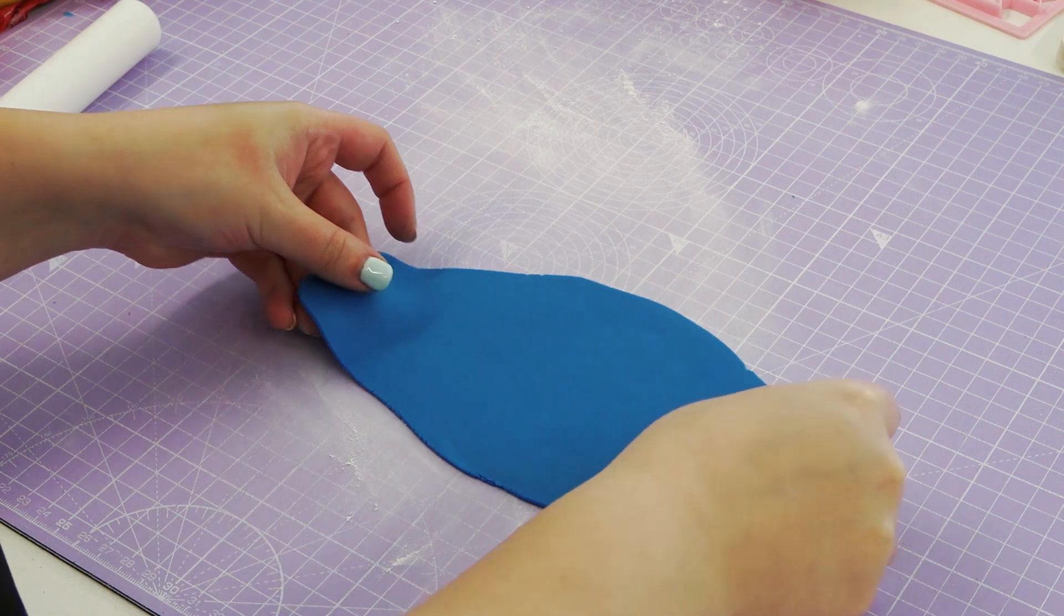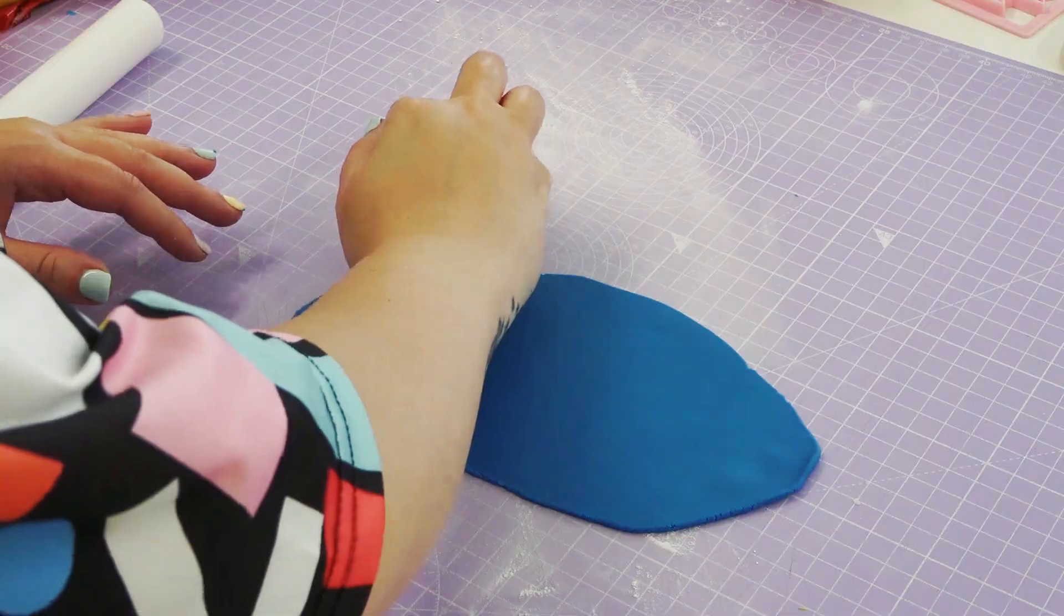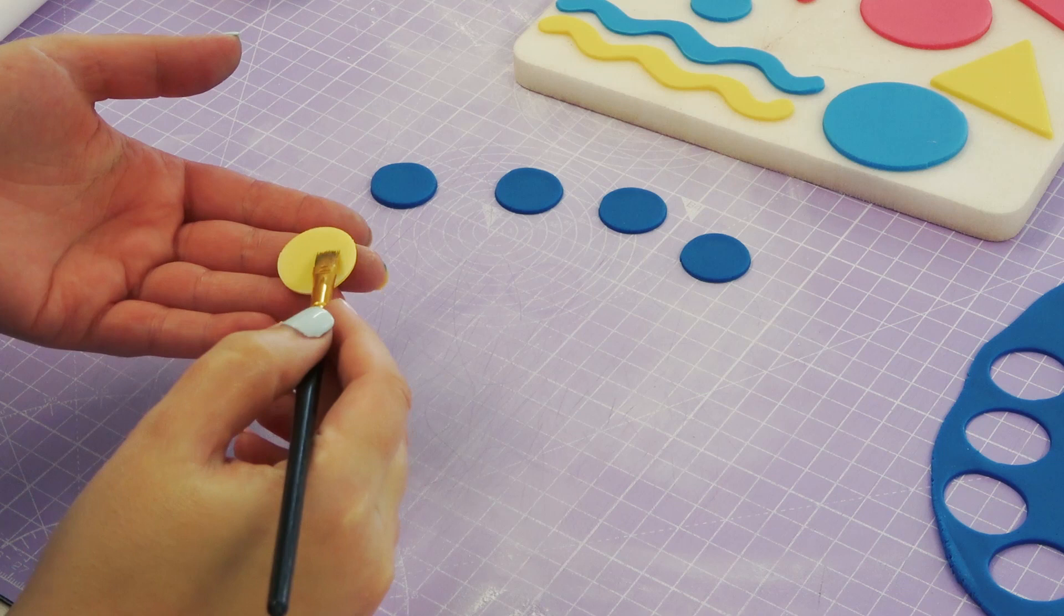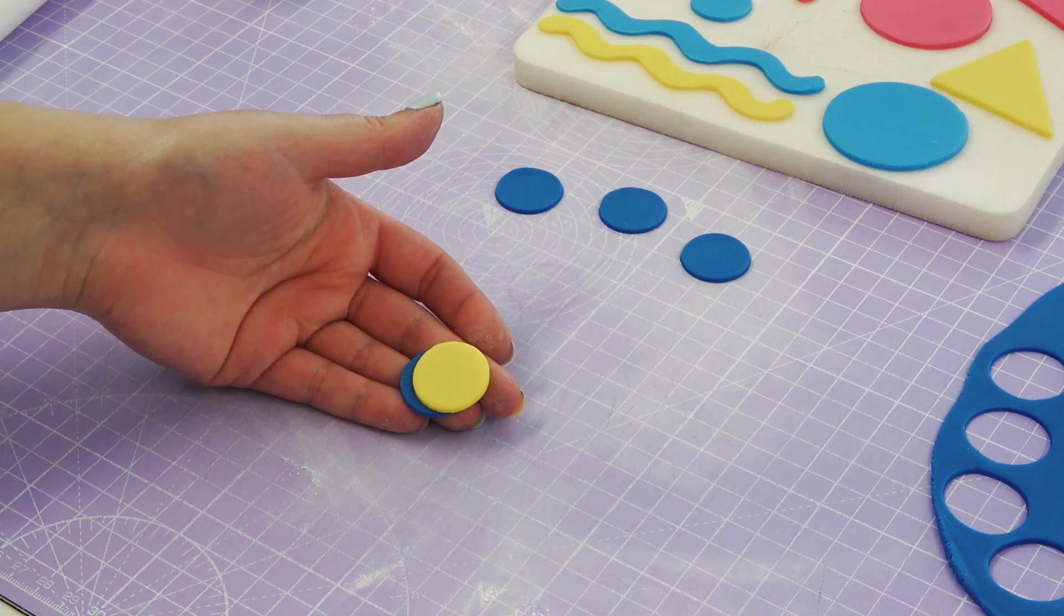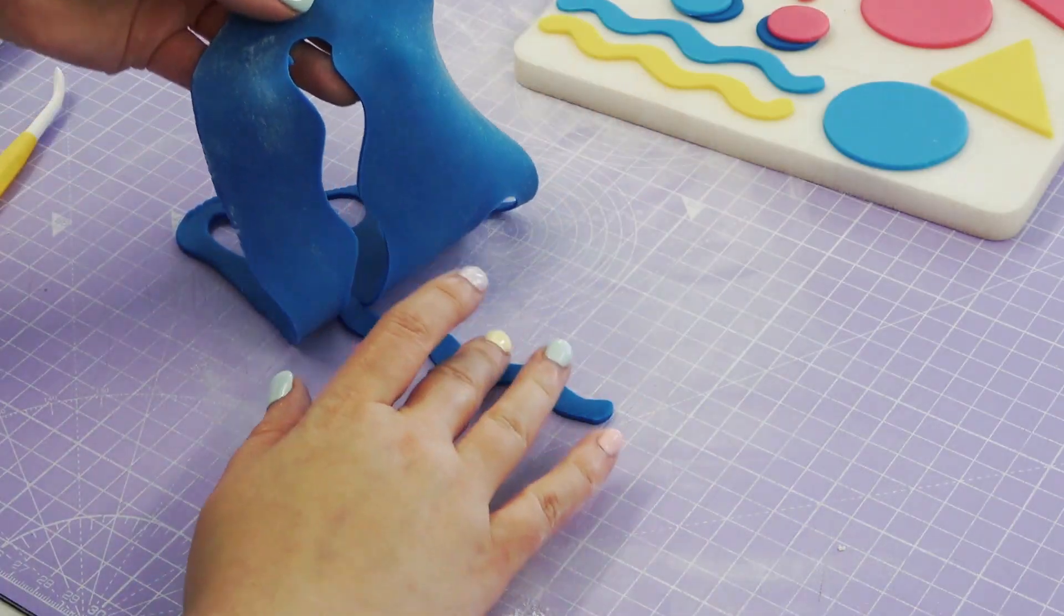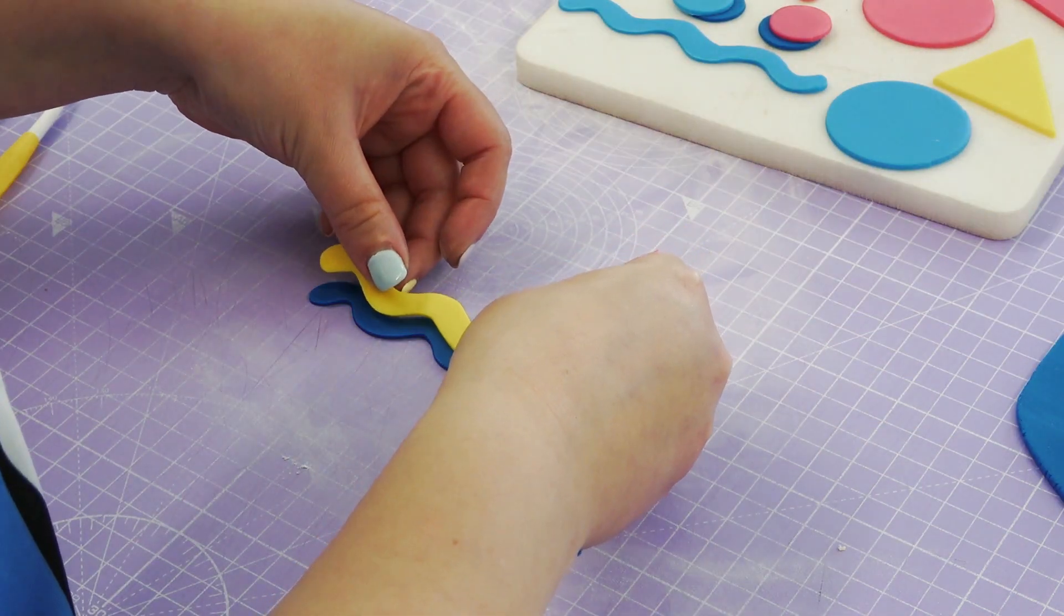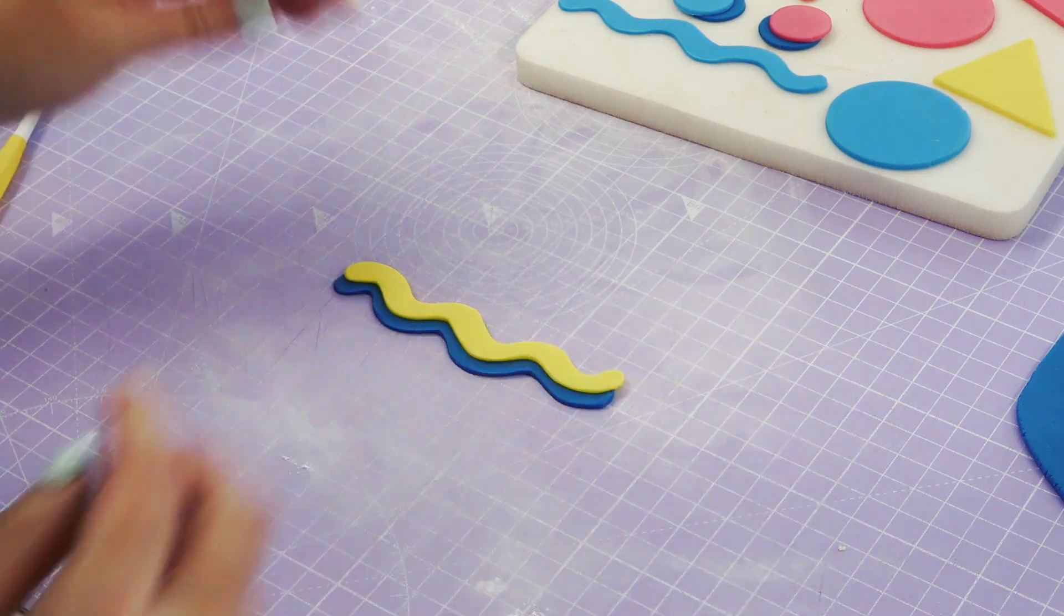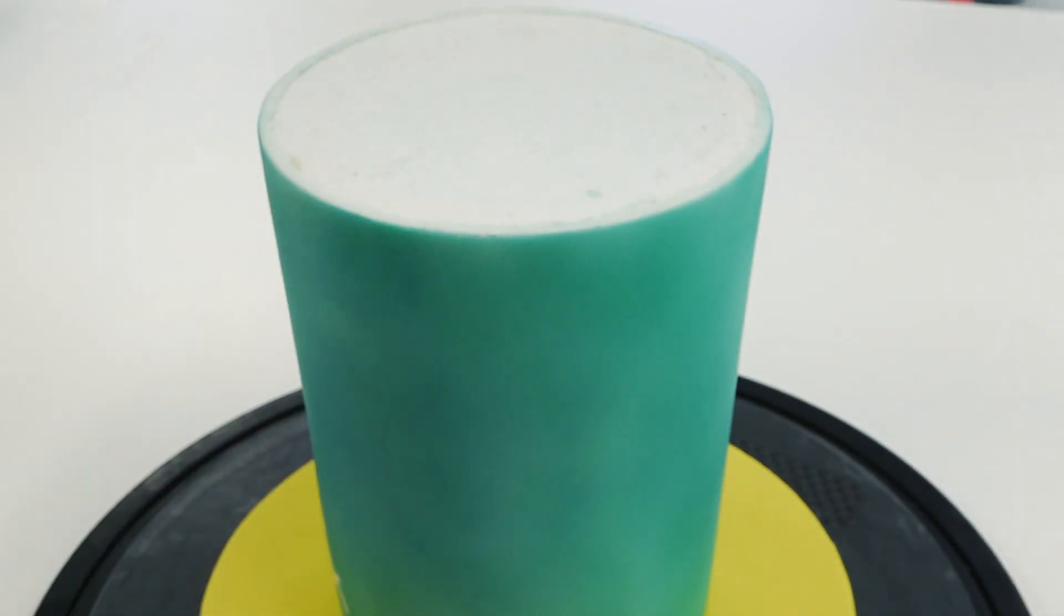I'm now cutting out shapes again but this time in a deep blue. My initial shapes were cut in hot pink, yellow and blue and I'm using the deeper blue as a shadow for each of these shapes. I'm just sticking them on top of each other with water slightly offset. You want to do this with all of your shapes, yes even the wiggles.